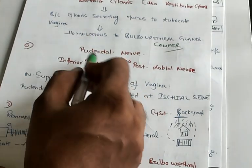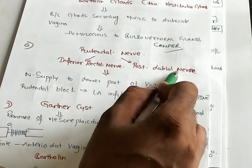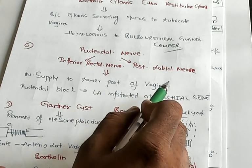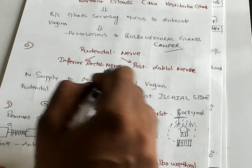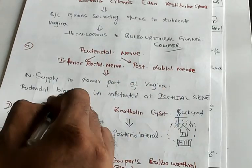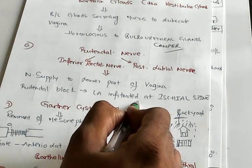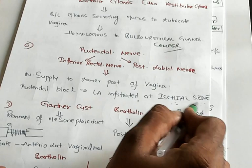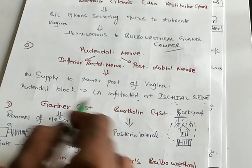What is the nerve supply? The pudendal nerve is giving rise to the inferior rectal nerve and the posterior labial nerve, and they are supplying the lower part of the vagina. If you want to anesthetize the vagina, you will be doing pudendal block. What is the landmark for infiltration? Ischial spine is the area where you will be infiltrating the local anesthetic.